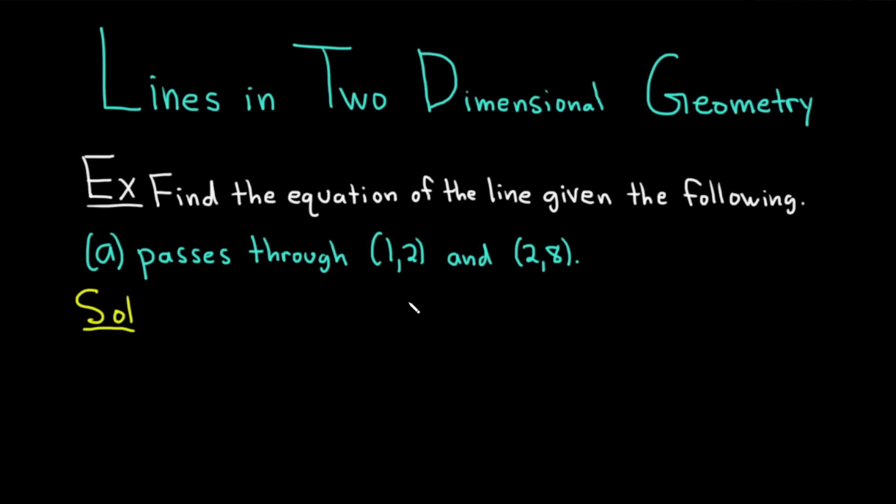So whenever you're given two points and you're trying to find the equation of the line, you start by finding the slope of the line. The slope formula is m equal to y2 minus y1 over x2 minus x1. So you subtract your y's, you divide, and subtract your x's.